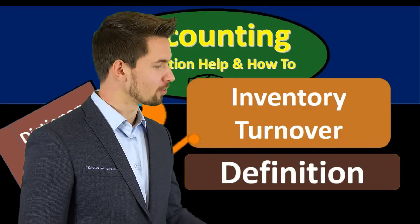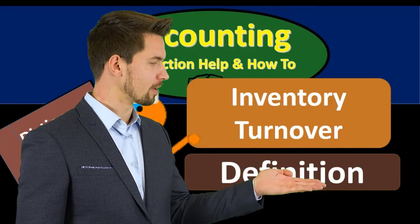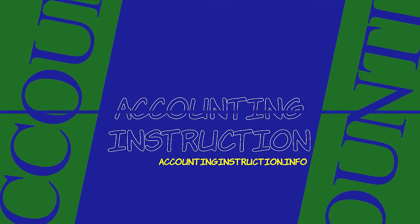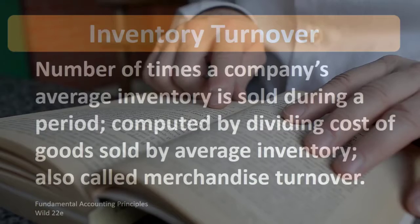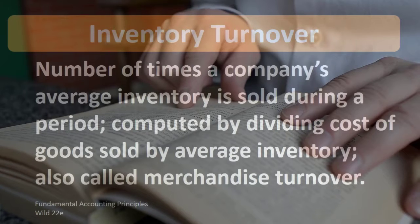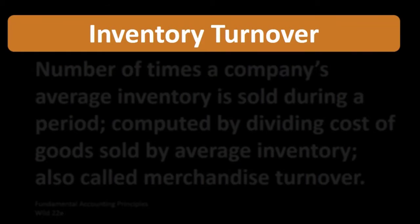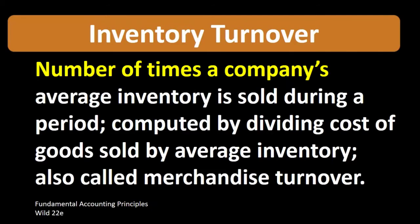Hello, in this lecture we will define inventory turnover. According to Fundamental Accounting Principles Wild 22nd Edition, the definition of inventory turnover is the number of times a company's average inventory is sold during a period, computed by dividing cost of goods sold by average inventory, also called merchandise turnover.